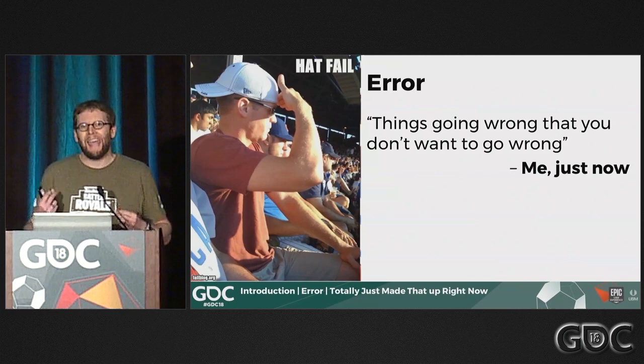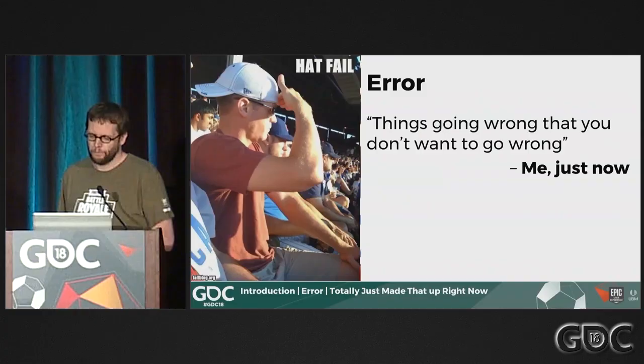In industrial settings, when we talk about error, we want to prevent all error from happening. However, what's interesting about working in games is that we want to prevent some errors — the unintended ones that make the player experience worse. But we do actually want players to make mistakes. That's part of the challenge. Different types of errors can be, in fact, not bugs but features. That's part of what I want to talk about today, rather than just how to prevent these things.